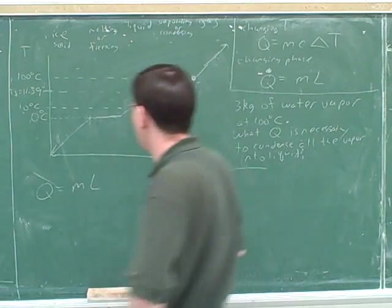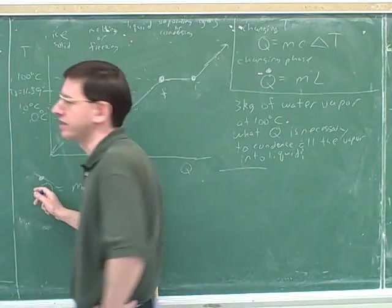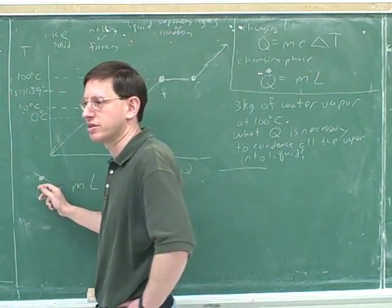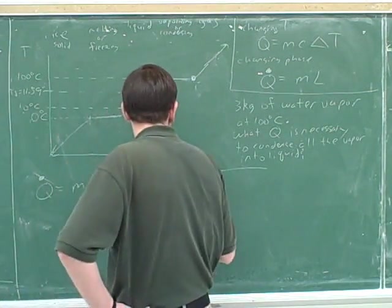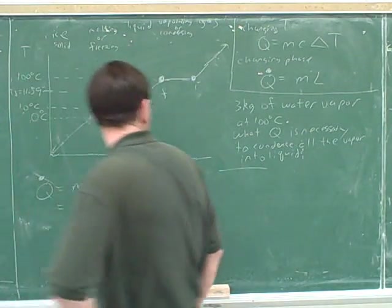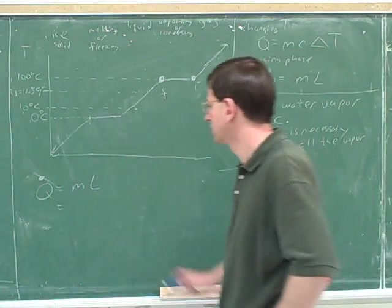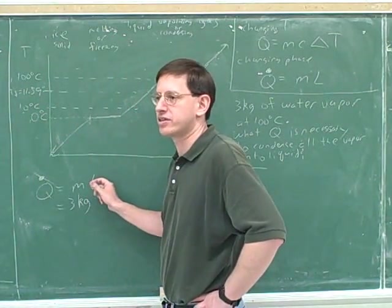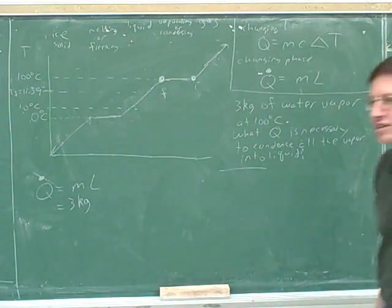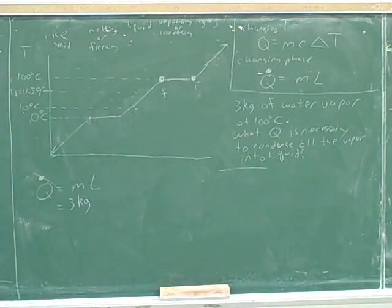What should we plug in for Q? Well, first of all, I should make a note to put in the dot here, because the formula is only going to tell me the magnitude of Q. I'm not going to plug in anything for Q because that's what the question is asked. How about for M? Three kilograms. And L is another constant we've got to look up in the book, just like C is a constant. Remember that C is called the specific heat. L is called the heat of transformation. That's a logical name because we're transforming phase.